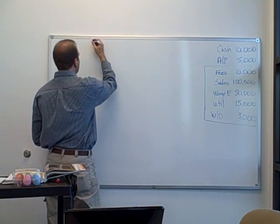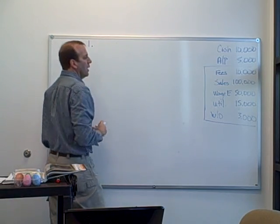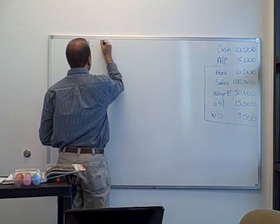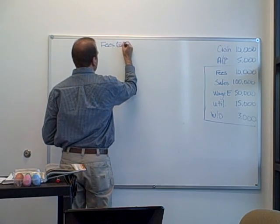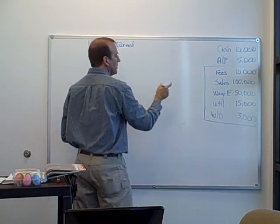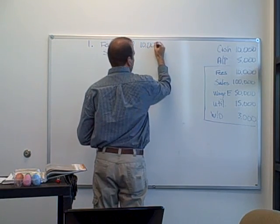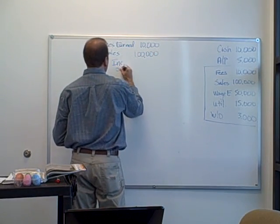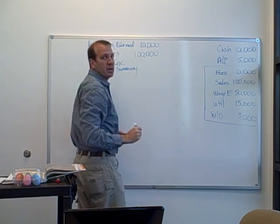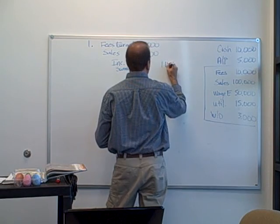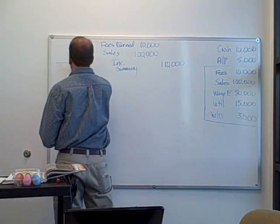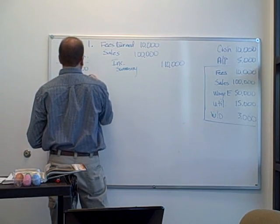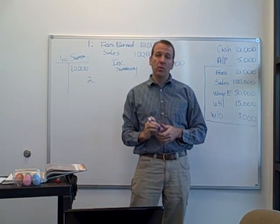The first step in closing out is to close out our revenues. Revenues have credit balances, so we have to debit them. I'm going to debit fees earned and sales. Fees earned is $10,000, so I'm going to debit that $10,000, and sales is $100,000. We're going to close it out to a new account called income summary — it's just a temporary account. Now I've got $110,000 in income summary. Step one is to close out revenues to income summary.